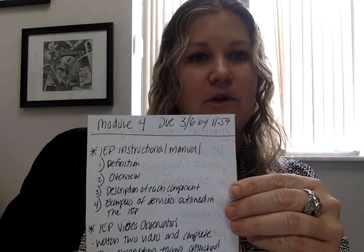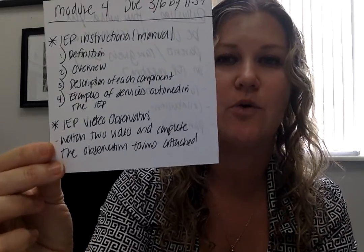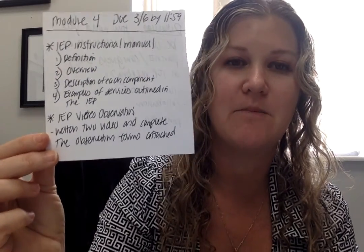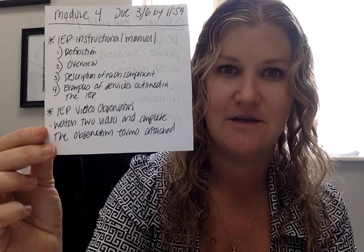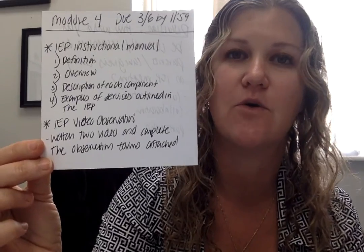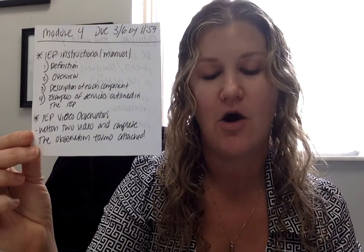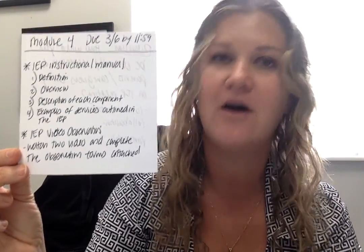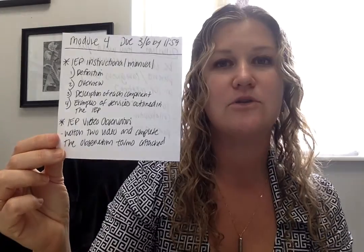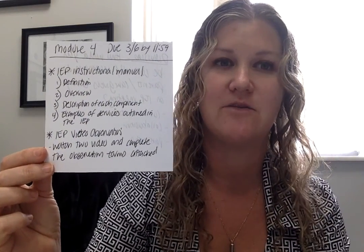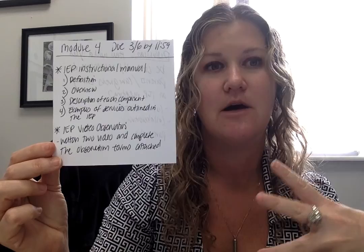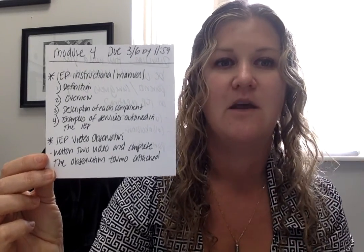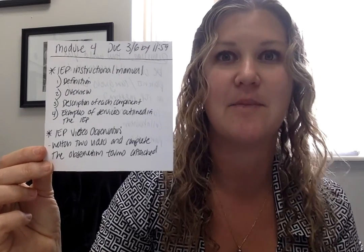After you're an IEP expert with your instructional manual, you are going to watch the two videos that I have linked in your module and complete the video observation form that is attached for both videos. These videos are a non-example and an example of what an IEP meeting should look like. Complete those video analysis forms and then submit your assignment — the instructional manual and the forms — together in one document through the appropriate assignment drop box.